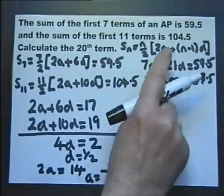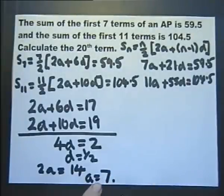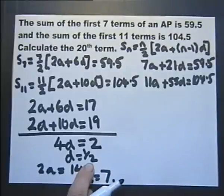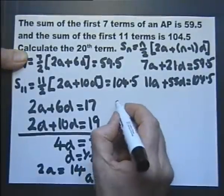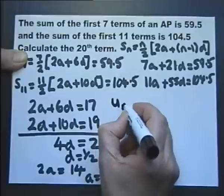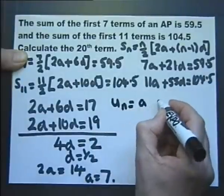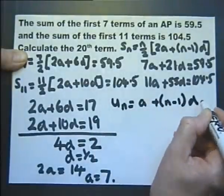So for this arithmetic progression, the first term A is 7 and the common difference D is one half. We're asked to calculate the 20th term, so we'll use the nth term formula U_n equals A plus (n minus 1)D, substituting n equals 20.